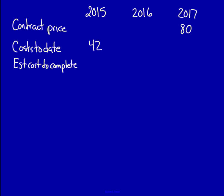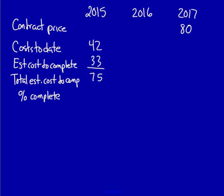The contract price is $80. I'm putting this under 2017 because by the end of 2017 I must have collected the $80 from my client. For 2015, the costs to date are $42. I now need the estimated cost to complete this project — according to the chart we estimate at the end of 2015 that it's going to cost us $33 to complete. Adding these two amounts together gives us the total estimated cost: $75. The percentage complete is $42 divided by $75, which is 56%.